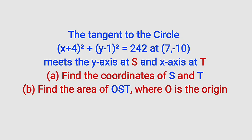Hello, good day viewers. Still on coordinate geometry, here is our problem for today. The tangent to the circle (x + 4)² + (y - 1)² = 242 at a point where x is 7 and y is negative 10 meets the y-axis at S and the x-axis at T. We are asked to find the coordinates of S and T, and also find the area of triangle OST where O is the origin.